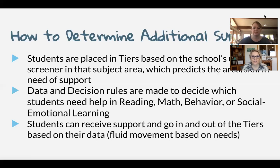Students can go in and out of tiers based on their data, so you have to base their needs on what the data is saying. If they're meeting benchmark, they don't need to be in an intervention — they can receive their information from the core. There's fluid movement based on the needs. Students may also go in and out of tiers based on what your district can provide for support, which would be dependent on your decision rules.